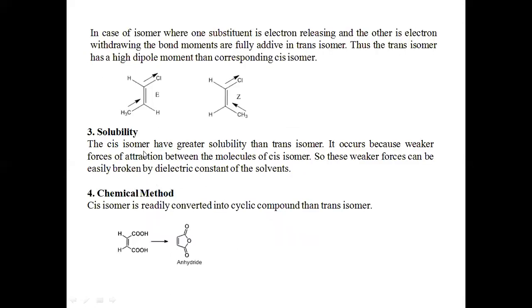To summarize the structure determination methods: the cis isomer has greater solubility than the trans isomer, and cis isomers are readily converted into cyclic compounds while the trans isomer does not convert into a cyclic compound.